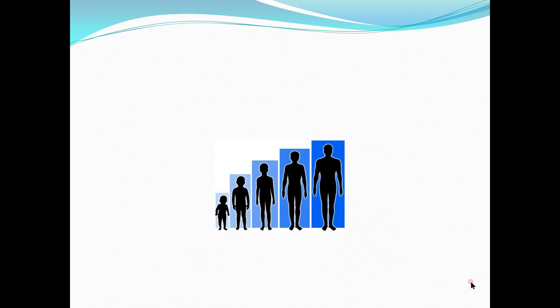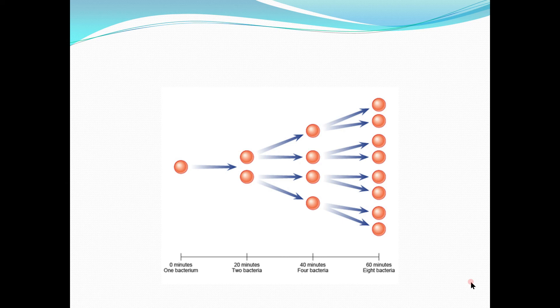Human beings basically grow in size — their growth refers to the increase in size from toddler to adult and then old age. In contrast, bacteria grow in number. Whenever they divide, they grow in number. At zero minutes you can see there is one bacterium.